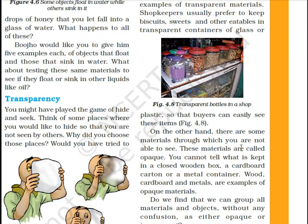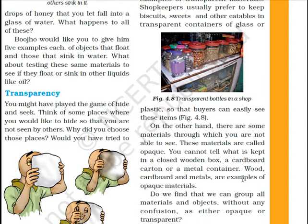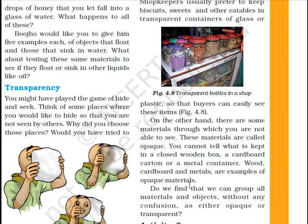On the other hand, there are some materials through which you are not able to see. These materials are called opaque. You cannot tell what is kept in a closed wooden box, a cardboard carton, or a metal container. Wood, cardboard, and metals are examples of opaque materials.